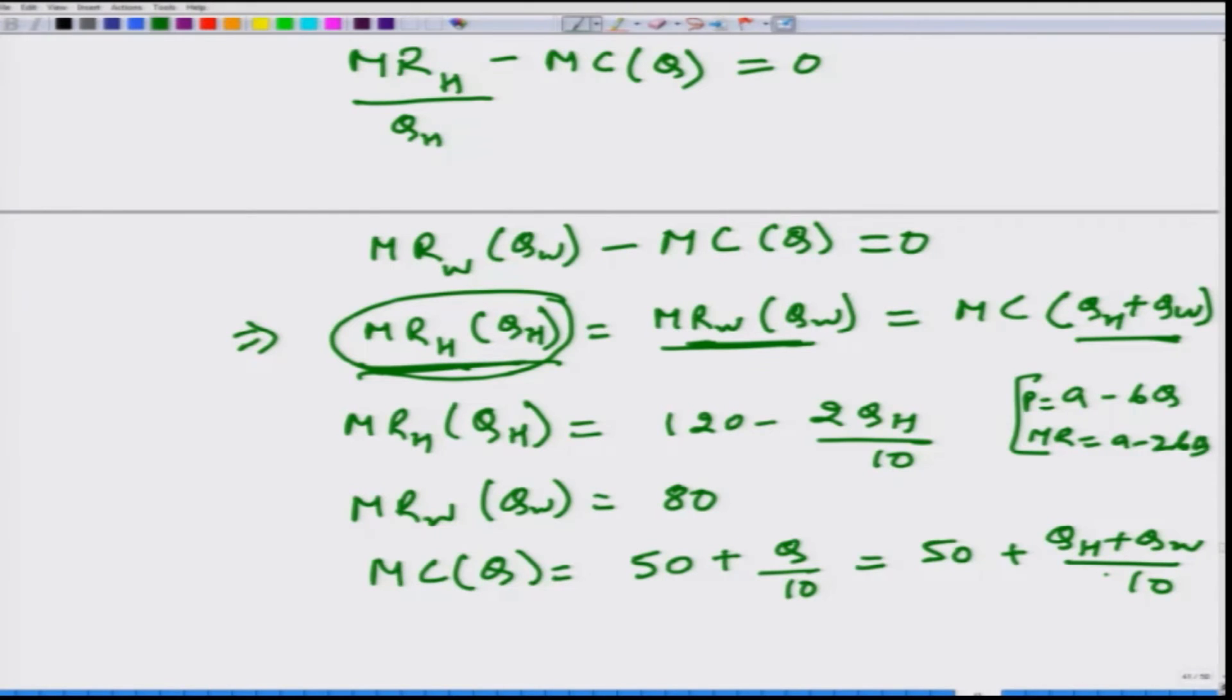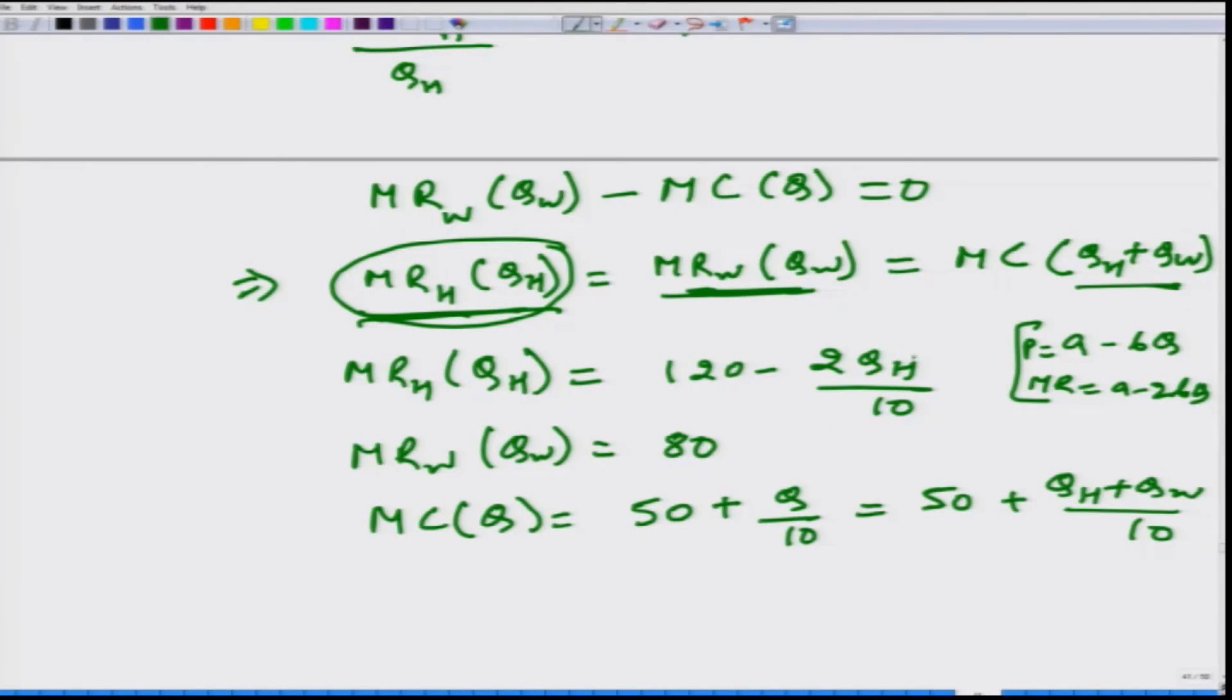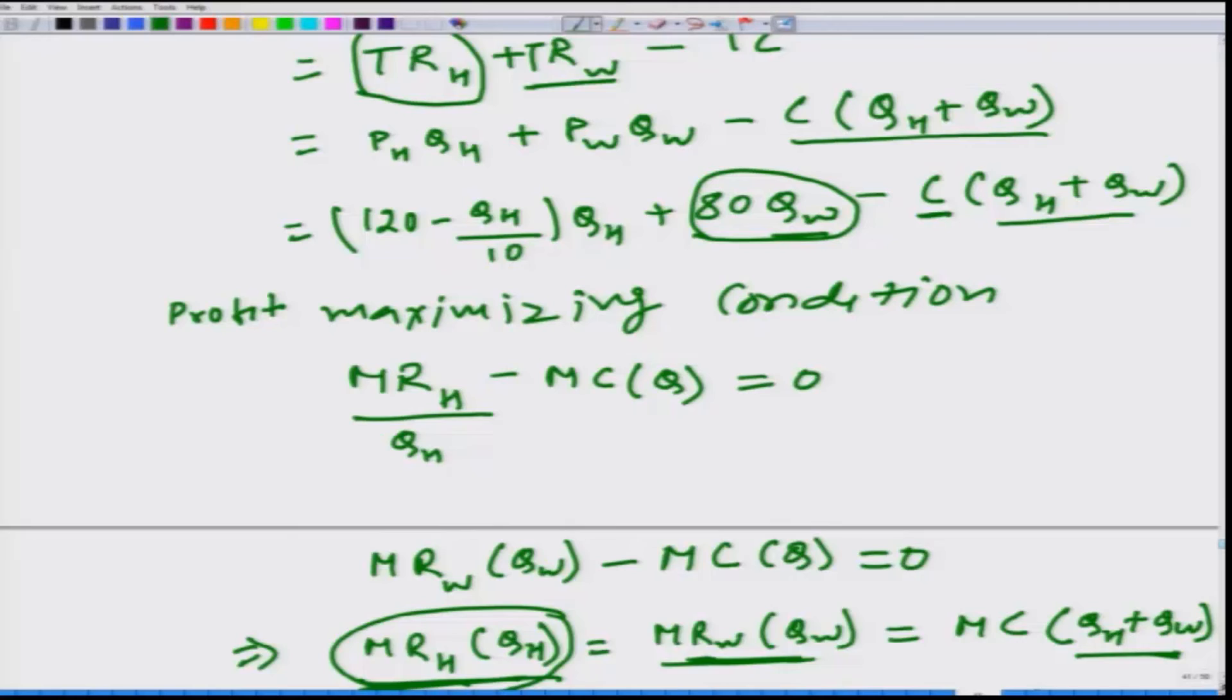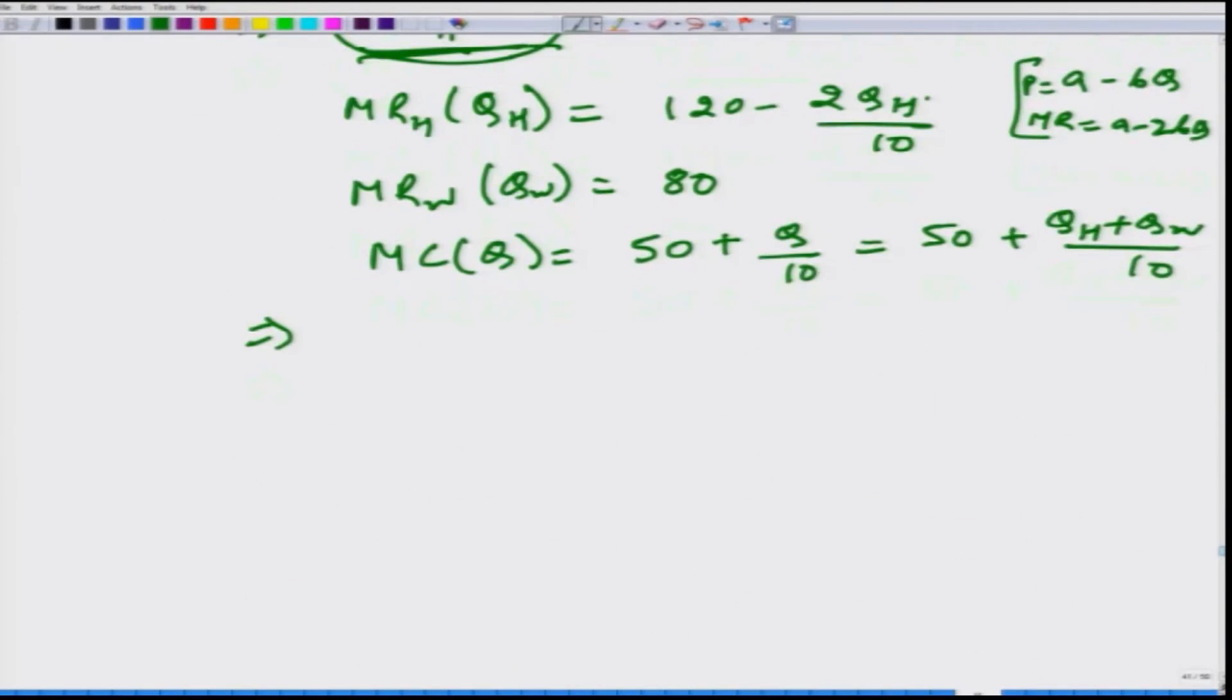What we have? We have three unknowns, two unknowns QH and QW and we have two formulations. We can use these two formulas to obtain the QH and QW. What are those two formulas? In the first setting that is the home setting MR marginal revenue at QH is equal to marginal revenue at Q. This is the first formula that we are going to use here, this has to be equal to this.